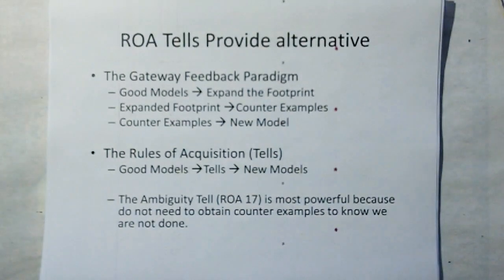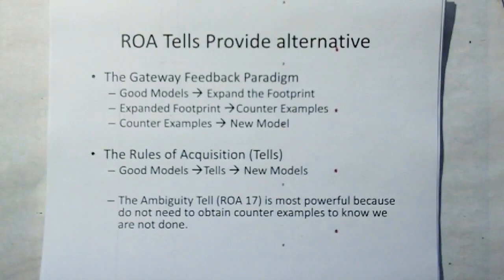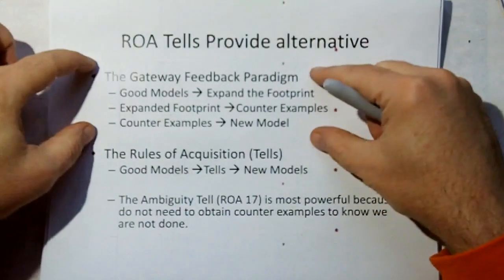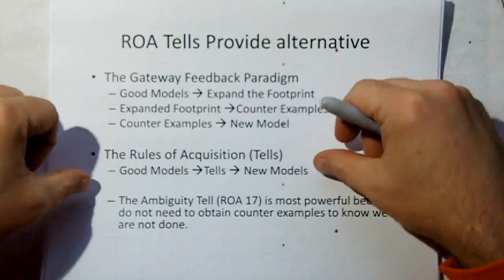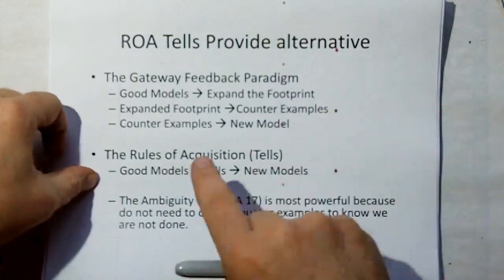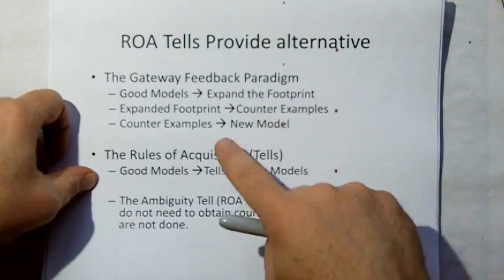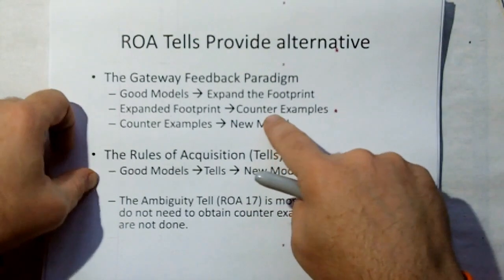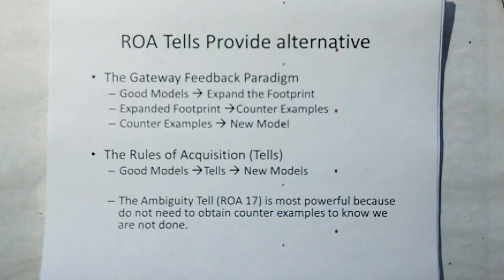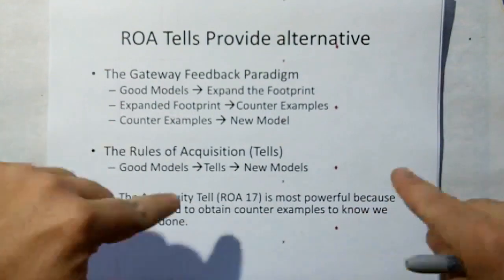The Rules of Acquisition have tells. What we can do is short-circuit this Gateway Feedback Paradigm and use one of the tells to go from a good model directly to a new model, bypassing the slower process. One of the most powerful tells is Rule of Acquisition 17, the Ambiguity Tell, which is an offshoot of this Rule of Acquisition.